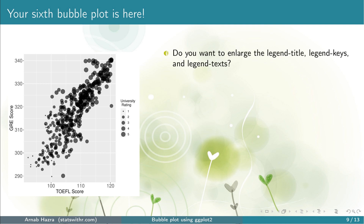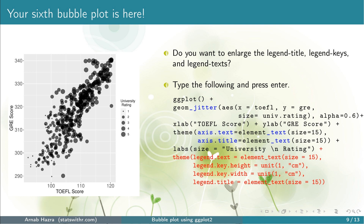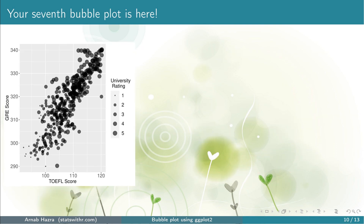Next, note that the legend title, legend keys, and legend texts are quite small and you might want to enlarge them. To do that, add inside theme: legend.text = element_text(size = 15) — this enlarges the numbers 1 through 5; legend.key.height = unit(1, 'centimeter') and legend.key.width = unit(1, 'centimeter') — these two enlarge the bubbles; and legend.title = element_text(size = 15) — this enlarges the legend title. Press enter and you get your seventh bubble plot with a larger legend.